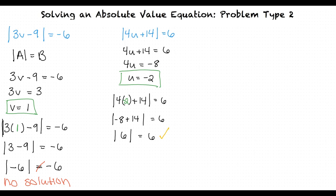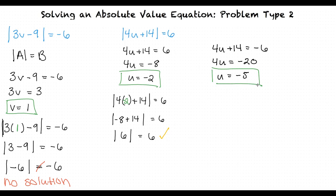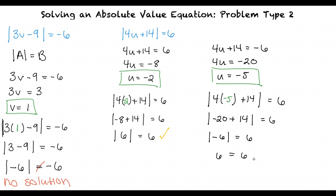Now let's switch the sign on the 6 in the original equation and solve for u again. After solving, we get u = −5, which when plugged back into the initial equation returns another true statement: 6 = 6. So the solutions to this absolute value equation are u = −2 and u = −5.